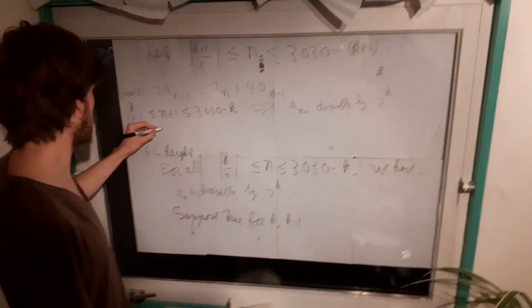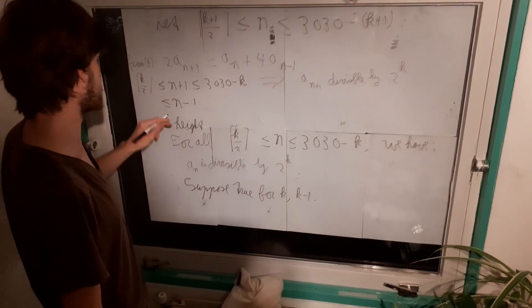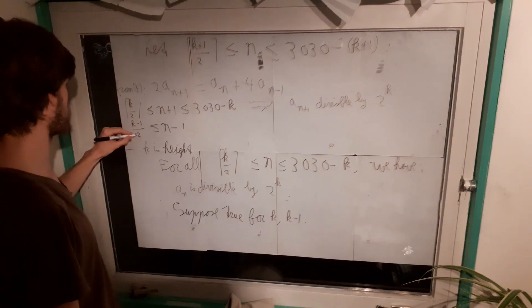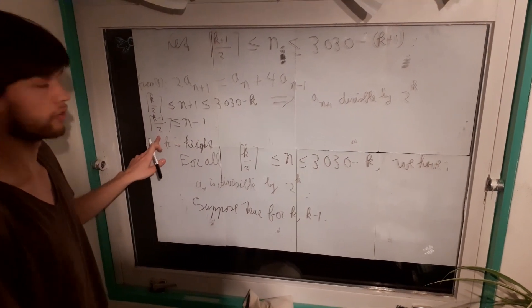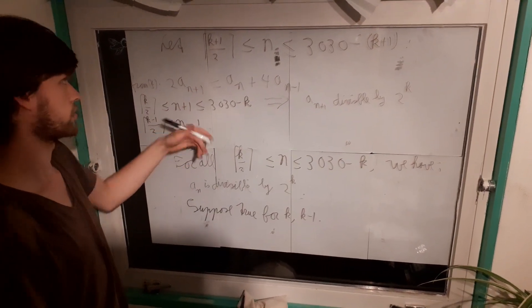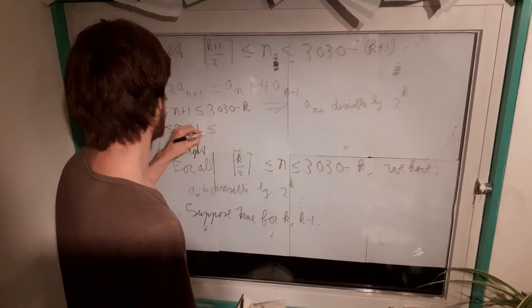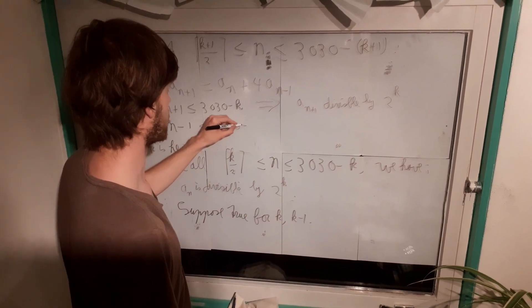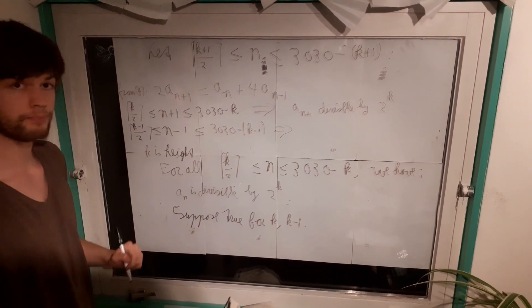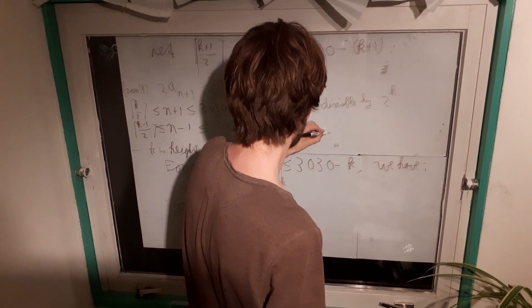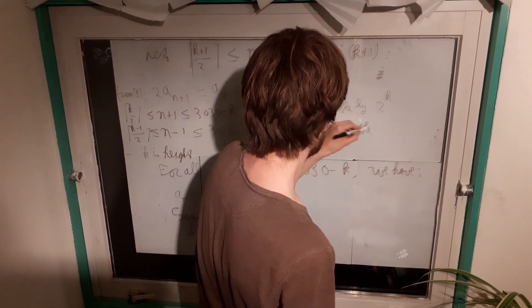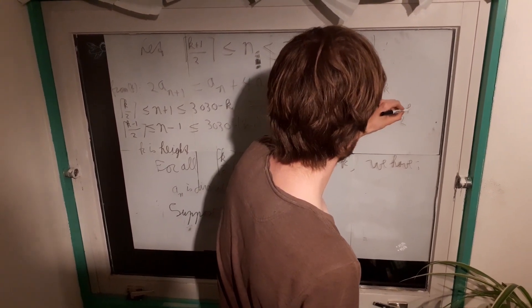n minus 1 we can also estimate. But now we have to change this k plus 1 to k minus 1 because it's divided by 2. Now k minus 1 over 2, if you round it up, it's just k plus 1 over 2 rounded up minus 1. Because the rounding kind of commutes. And, of course, this is less than 3030 minus k minus 1. So we can use the induction hypothesis and conclude that a_{n-1} is divisible by 2 to the power of k minus 1.